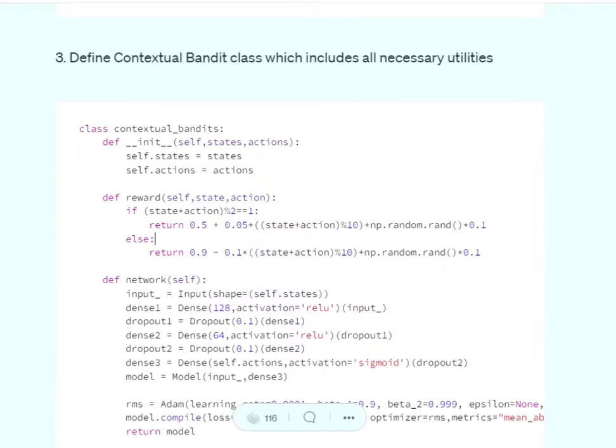Contextual bandits class. Here you can see we are first assigning total number of states and total number of actions. Then you're defining the reward function. The reward function is quite easy.